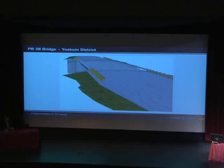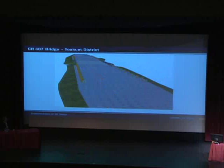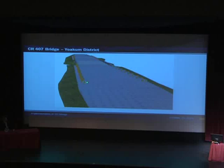Their next bridge replacement project is a bridge that's going to replace a structurally deficient bridge at Park Road 38 near Sealy, Texas. You can see a close-up view of some of the 3D line styles they used for the metal beam guard fence. There's another small bridge replacement where they took it a step further with the 3D line styles and added some 3D cells to represent the SGTs at the end of the guard fences.